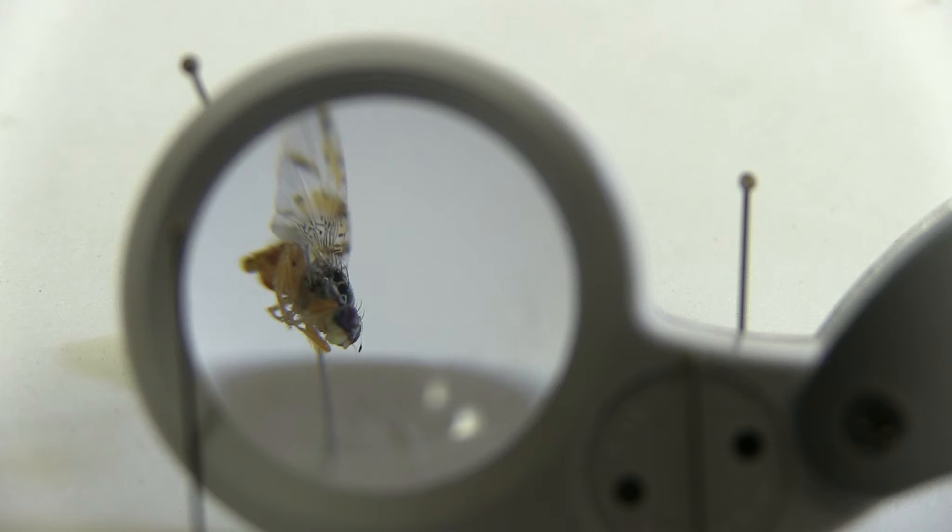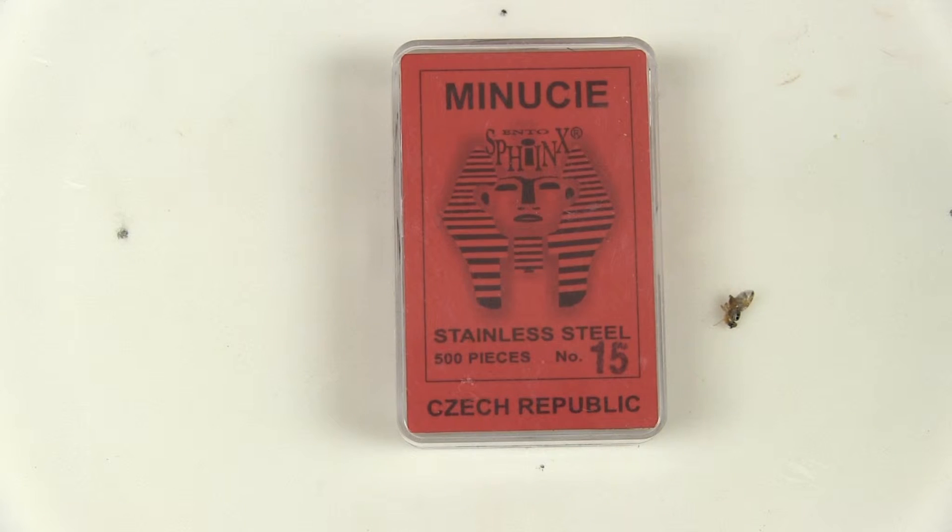For small, fragile insects like fruit flies or minute lepidoptera, the correct technique to use is double mounting with a micro pin.